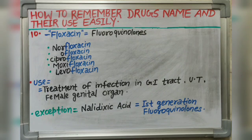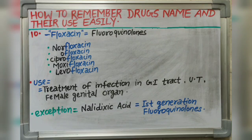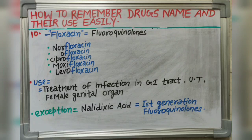Next suffix is -floxacin. Floxacin indicates fluoroquinolones. Drugs like norfloxacin, ofloxacin, ciprofloxacin, moxifloxacin and levofloxacin each end with the -floxacin suffix and belong to fluoroquinolones. It is used in treatment of gastrointestinal tract infection, urinary tract infection and female genital organ infection. Note: nalidixic acid is also a fluoroquinolone — the first generation — but it does not end with the -floxacin suffix.